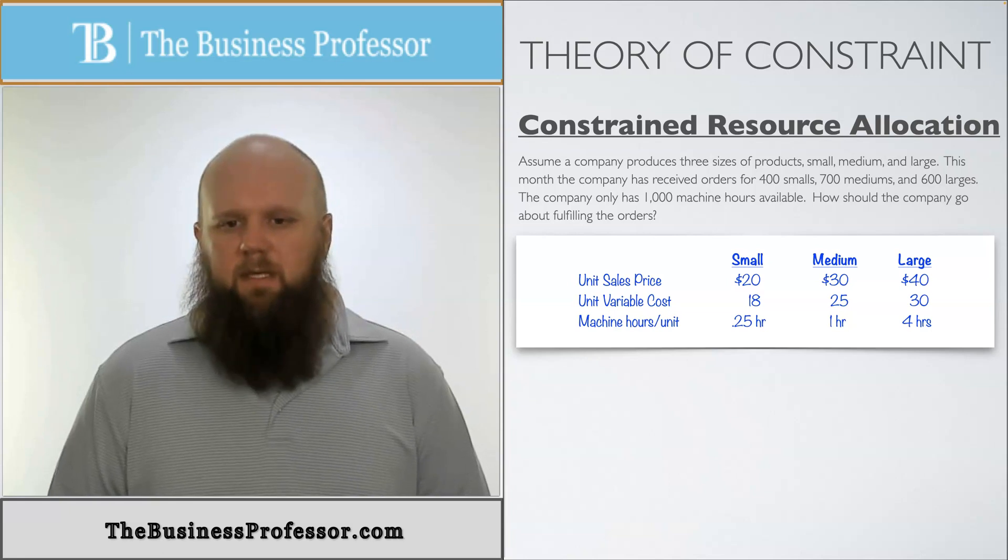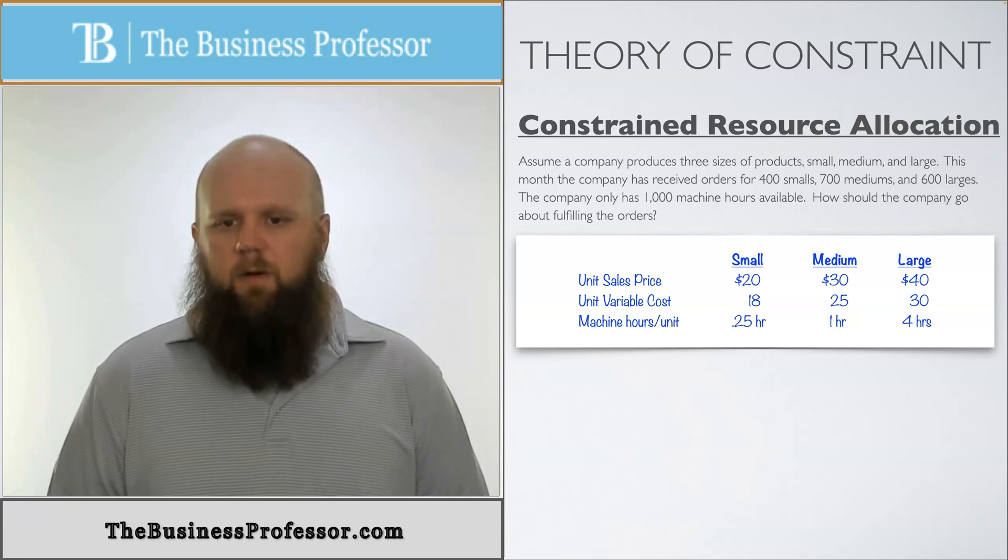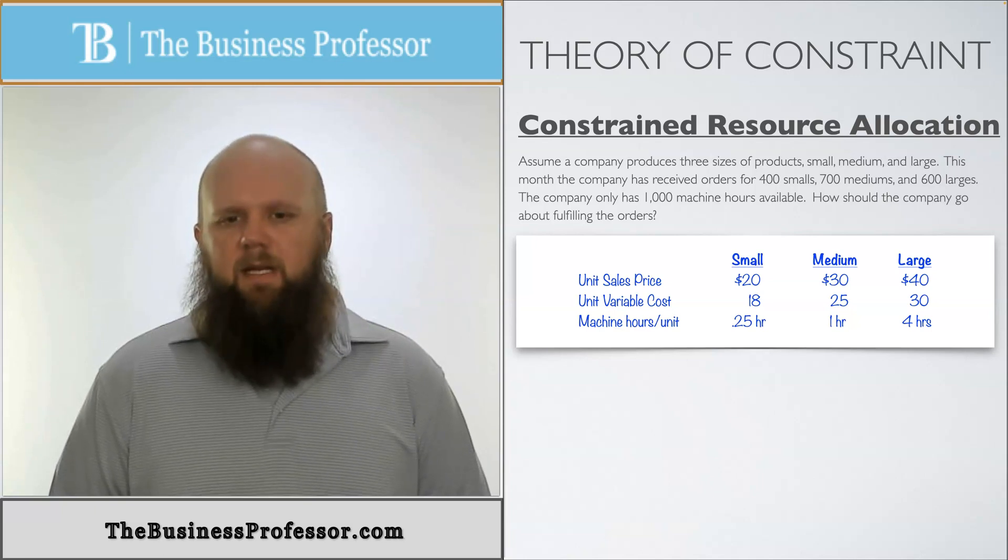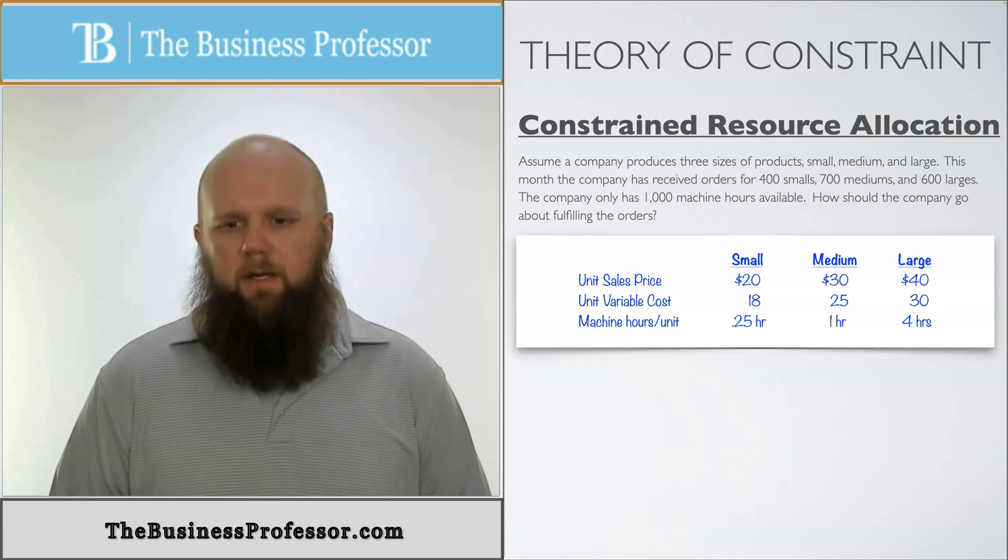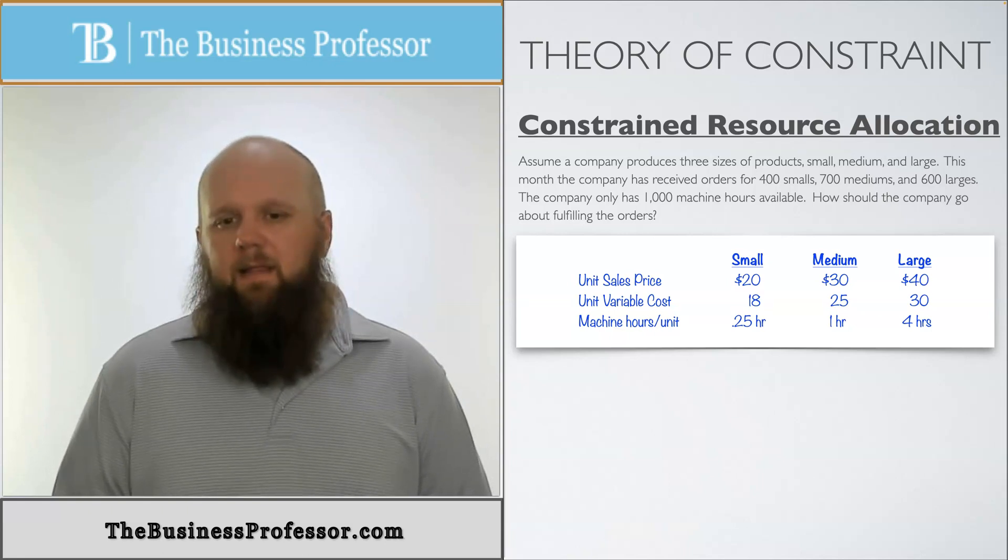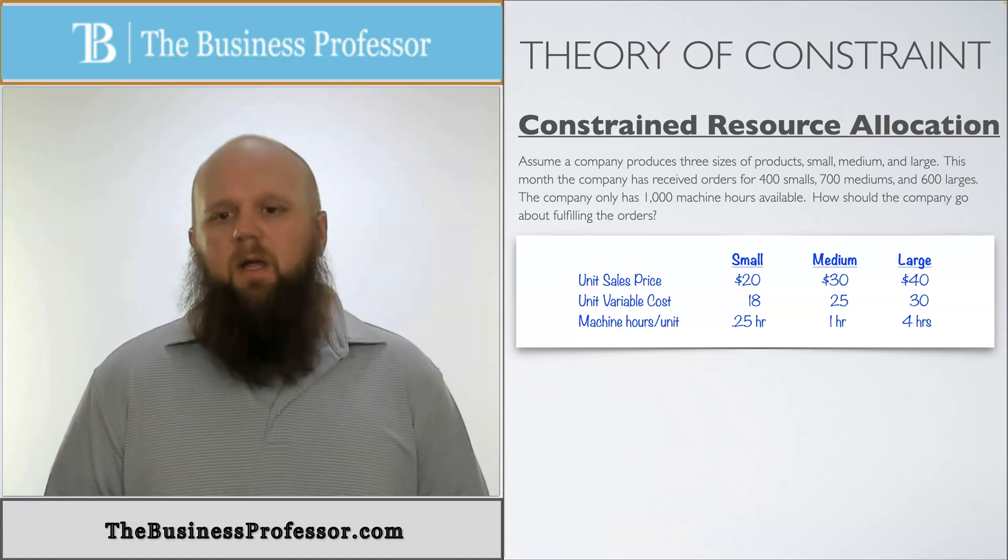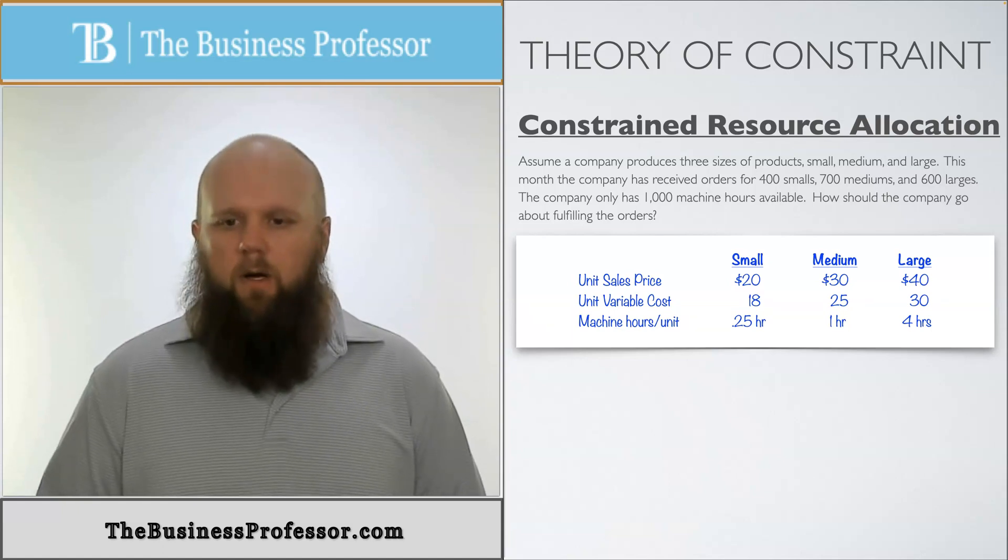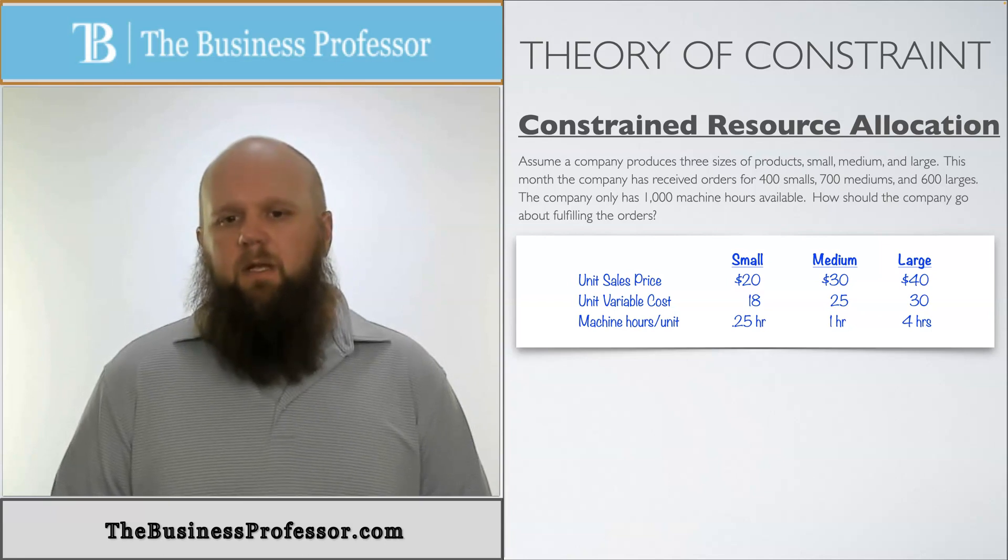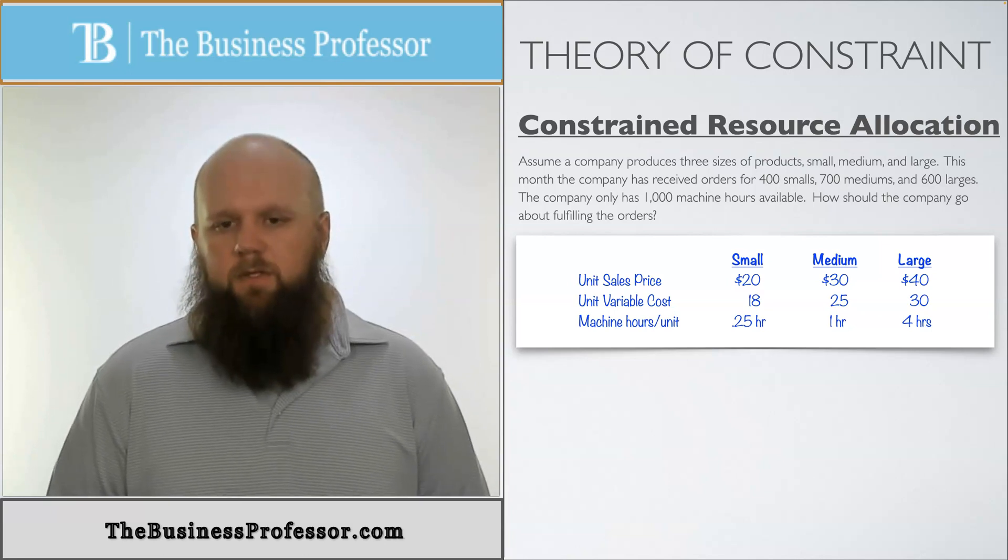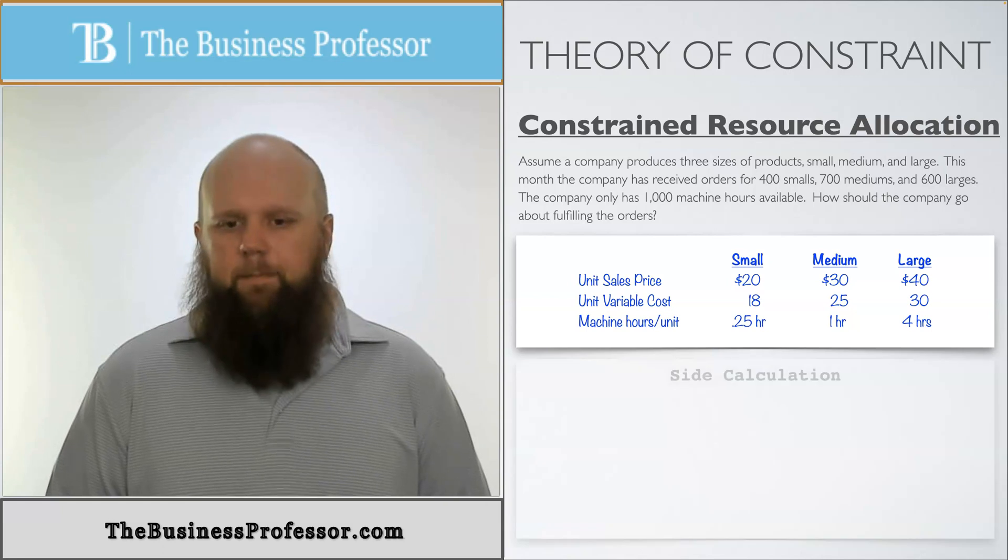Right now, as we see, it says the unit sales price is $20 for small, $30 for medium, $40 for large. And it gives us some unit variable costs. And it tells us how many machine hours it takes to produce per one unit. Now, if we were only looking at this from the standpoint of the sales price, when can we sell more, then naturally we would start with large and work our way backwards. However, we're going to look at this from the contribution margin per unit of restrained resource.